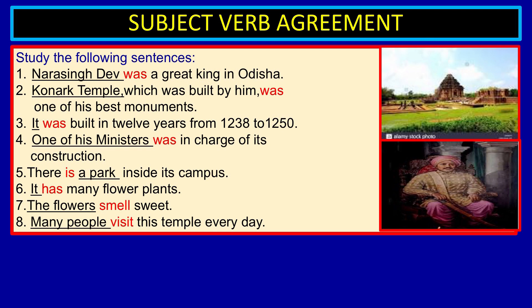Now look at 'one of his ministers was in charge of its construction.' Ministers is plural, but the verb is singular here — because the subject is 'one of his ministers.' The head noun is 'one,' and 'one' agrees with the singular verb 'was.' So one of his ministers was in charge of its construction.